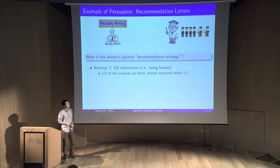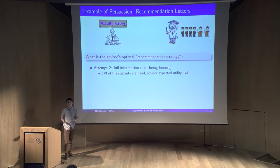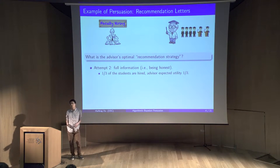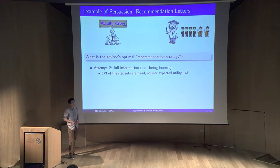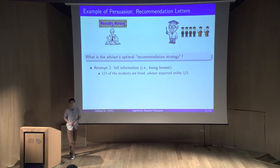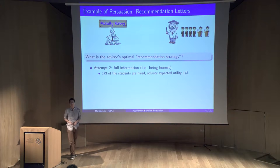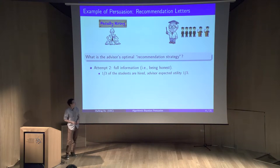Our second attempt is to reveal full information — always telling the truth. If the student is good, say good; if average, say average. In this case, because one-third of the students are excellent, the advisor gets utility one-third in expectation.